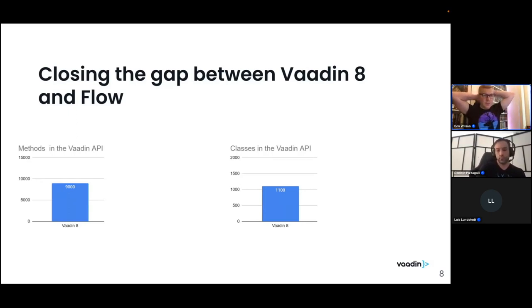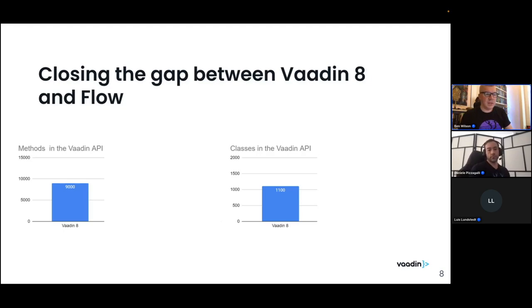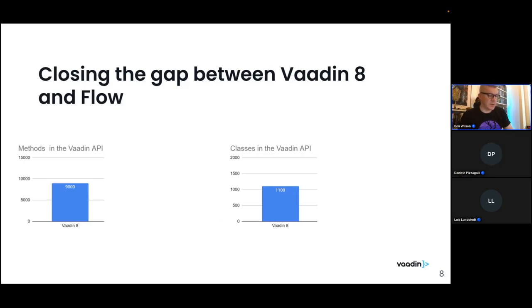Vaadin 8, if you look at the latest version, it's going to be comparable to the richness of features Vaadin 8 had in 2020. The Vaadin API had around 9,000 methods and about 1,100 classes in the Vaadin 8 namespace that you could invoke and work with.